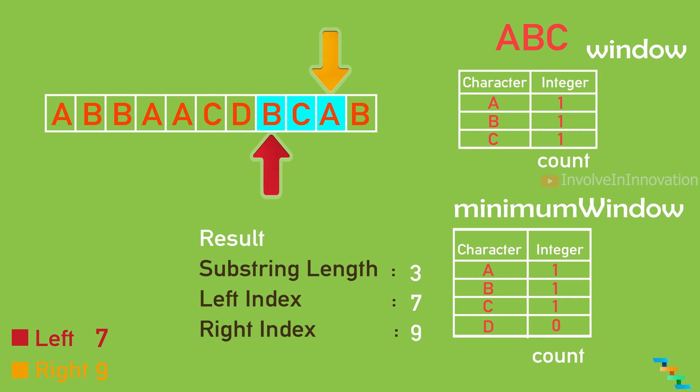Remove the left index value 'b' from the minimum window hash table — now a is 1, b is 0, c is 1, which is not matching. Increment the right index and get 'b', add it — now a is 1, b is 1, c is 1, matching with length 3, which is equal to the previously found substring. So we do not need to update the left and right index. By this method we find the minimum window substring in O(n) time complexity.